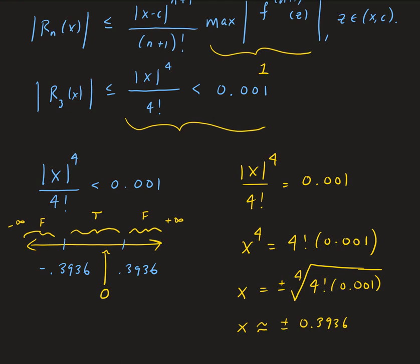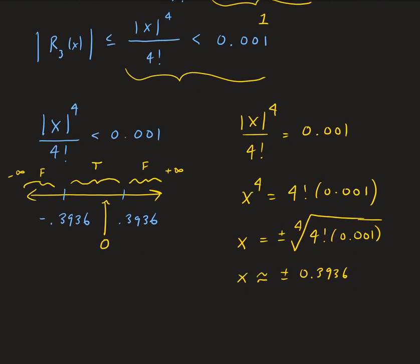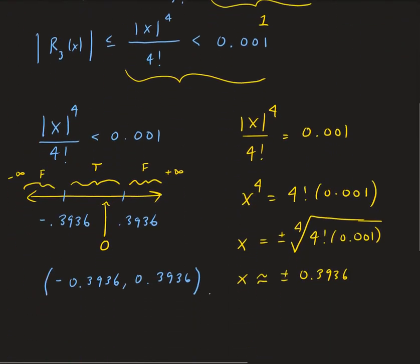This tells us the x values that make this inequality true. The solution is that the x values we're looking for fall between negative 0.3936 and positive 0.3936. This means that if we pick an x value in this interval, evaluate sine of that value, and take the difference between the actual value and the approximate value, then that difference will be less than 0.001.